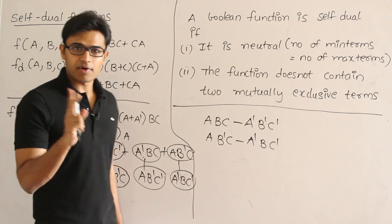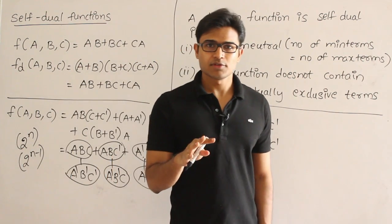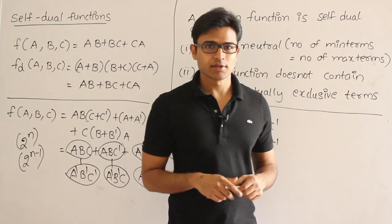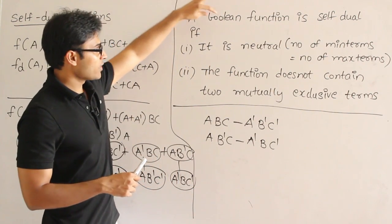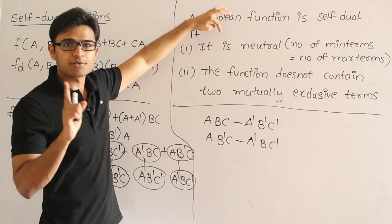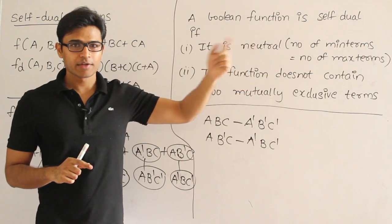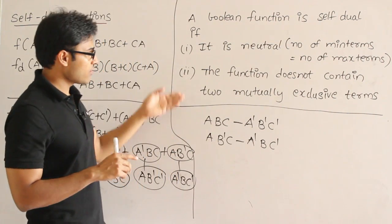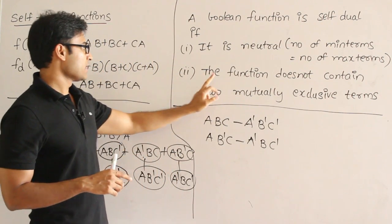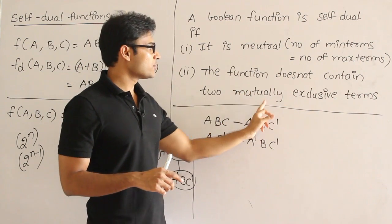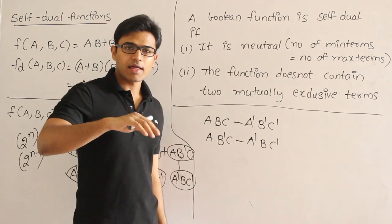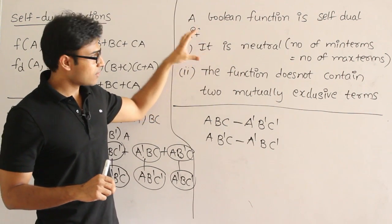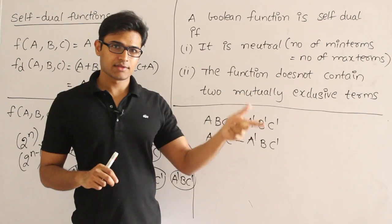So these two are the characters required or essential, sufficient, necessary and sufficient for a function to be self-dual. So depending on those two rules, we are writing like this. A Boolean function is said to be self-dual if first thing is it has to be neutral. Neutral means the number of minterms should be equal to number of maxterms. But it is just necessary. It is not sufficient. And you have to add one more condition. So what is the other condition is the function does not contain two mutually exclusive terms, which means it should be neutral as well as two mutually exclusive terms should not be present. And these two independently are necessary, but they both have to be present in order to say that a function is self-dual.